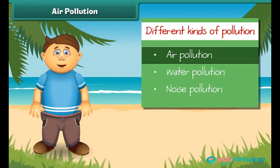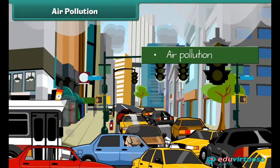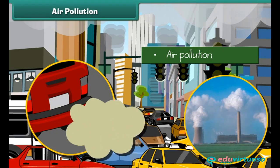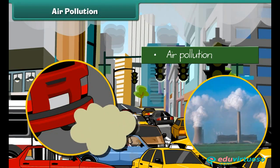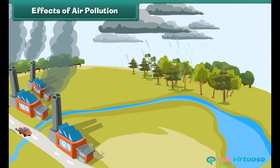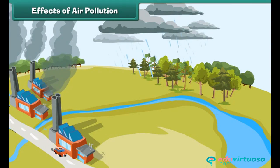First, let's know about air pollution in detail. Air gets polluted when unwanted substances — air pollutants — enter into it. But the question is how these substances enter the air. These air pollutants come due to burning of fuels and emission of poisonous gases from industries. This polluted air mixes with clouds in the atmosphere.